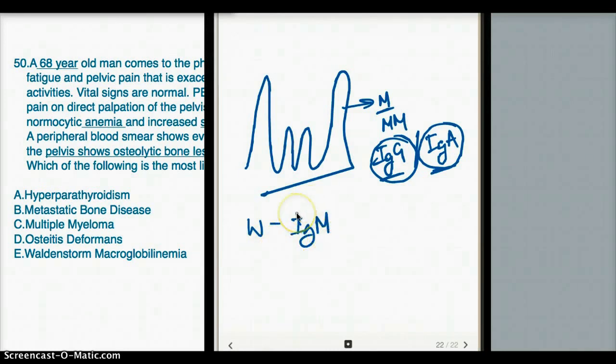Don't jump to multiple myeloma as soon as you see M spike. M spike due to IgG or IgA would be multiple myeloma. M spike due to IgM will be Waldenstrom macroglobulinemia.